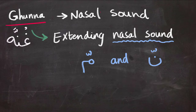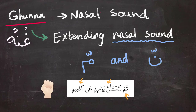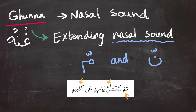Surat At-Takathur offers a very good training for ghunnah with its both types. As you can see, there is Mim with shaddah so you give it two harakat, and Nun with shaddah so you give it two harakat. This is the ghunnah.